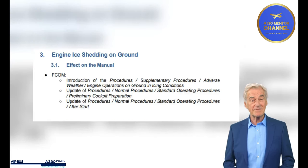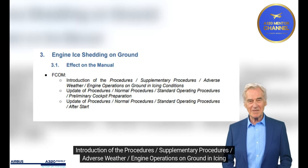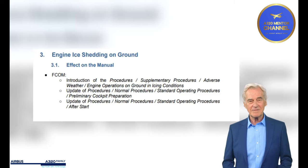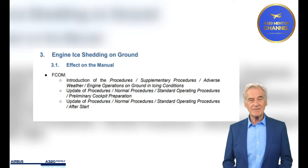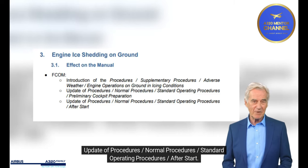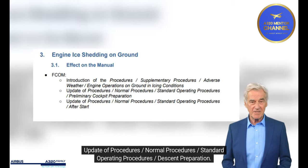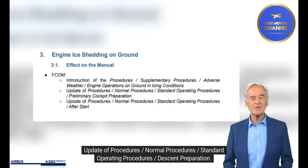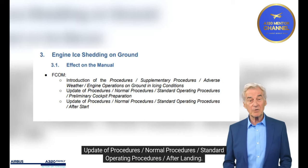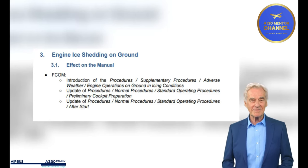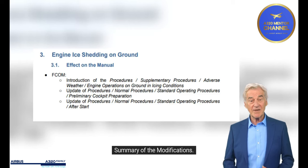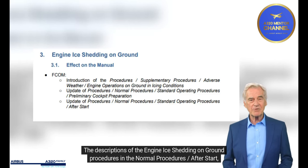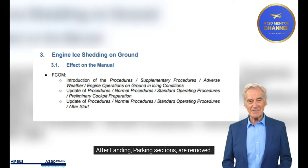Engine Ice Shedding on Ground. Effect on the Manual FCTM. Introduction of the Procedures: Supplementary Procedures, Adverse Weather, Engine Operations on Ground and Icing Conditions. Update of Procedures: Normal Procedures, SOP — Preliminary Cockpit Preparation, After Start, Descent Preparation, After Landing, and Parking. Summary of the Modifications: The descriptions of the engine ice shedding on ground procedures in the normal procedures after start, after landing, and parking sections are removed.